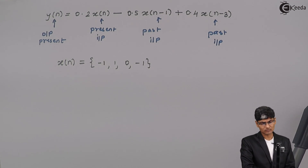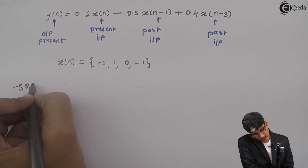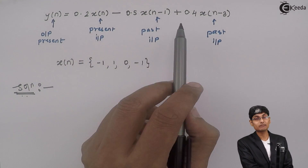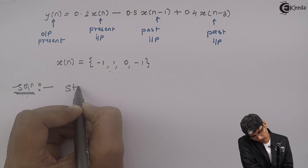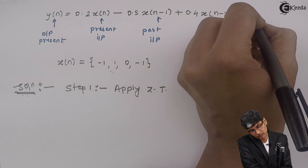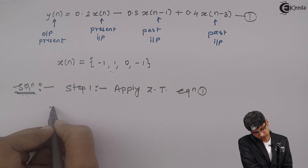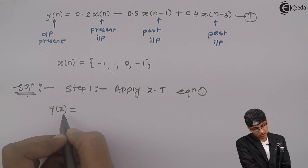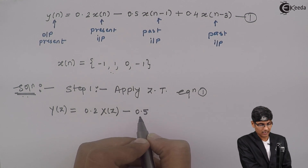I need to understand what my system looks like. The problem is to determine the output of a given system for a particular input. Step 1: apply Z-transform to equation number 1. When I apply Z-transform to equation 1, I replace all y(n)'s with Y(z) and x(n) with X(z).